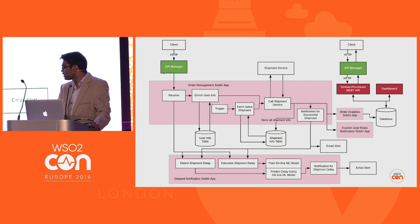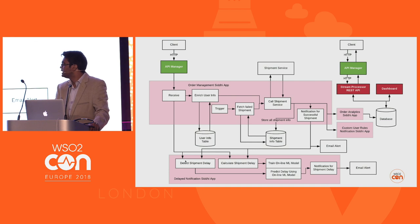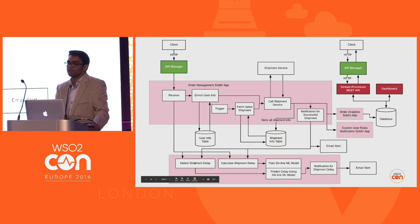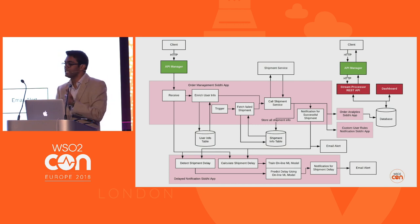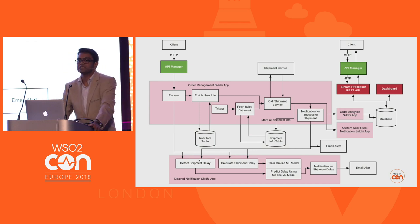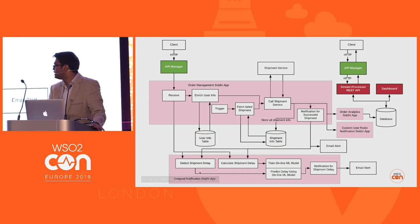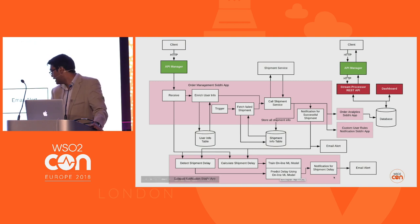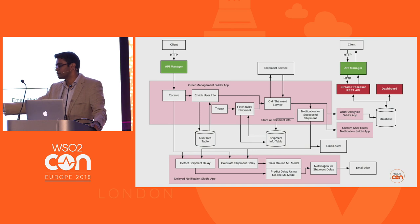What we basically do is when we receive a message, we wait for a certain period of time. The order is received — have we done a successful shipment? If a successful shipment came within a period of time, then it's fine. But if there is a delay and we didn't receive a successful shipment, then we identify there is a delay in processing the message. We use a machine learning model to predict how much time it might take, and then inform the user saying unfortunately we can't ship your item right now — you might be getting the item in X number of days.